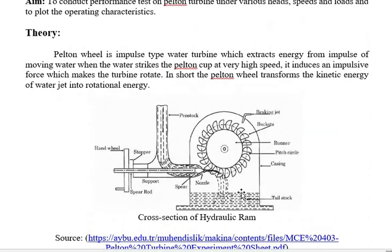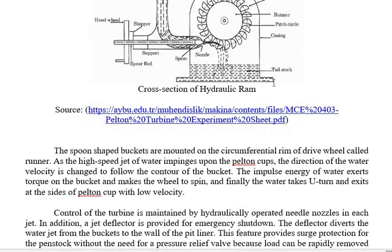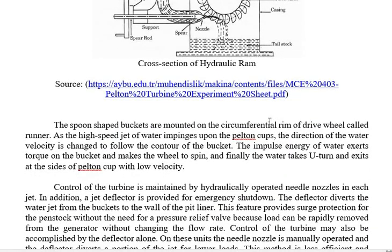The tail race is the channel where water falls after striking the wheel — it is the lower portion where water collects. The reservoir or dam is called the head race in a hydroelectric power plant. The water after striking the wheel falls into the tail race, also called the tail stock.